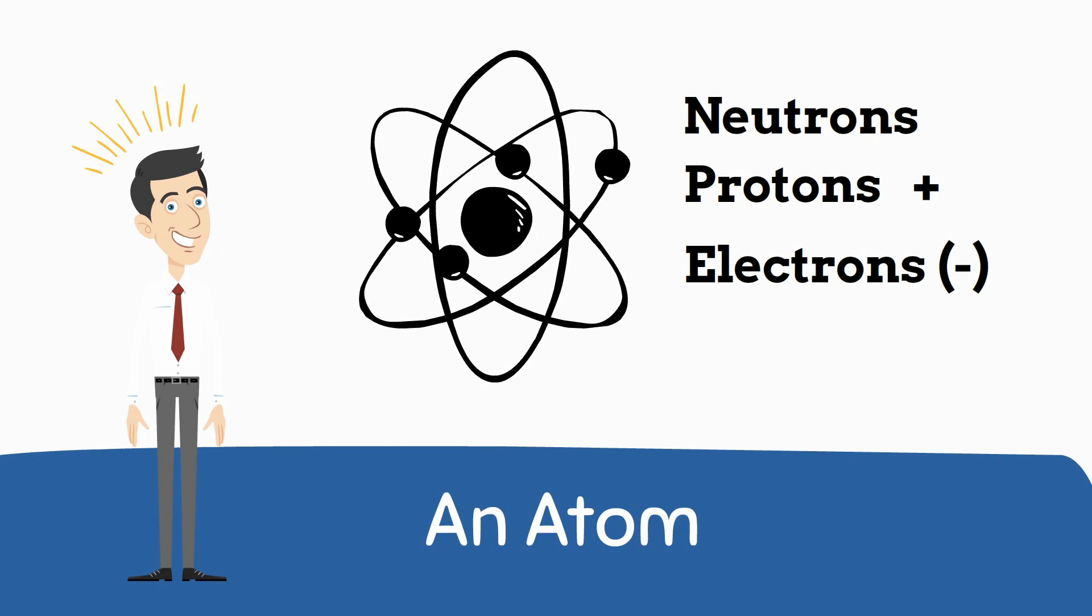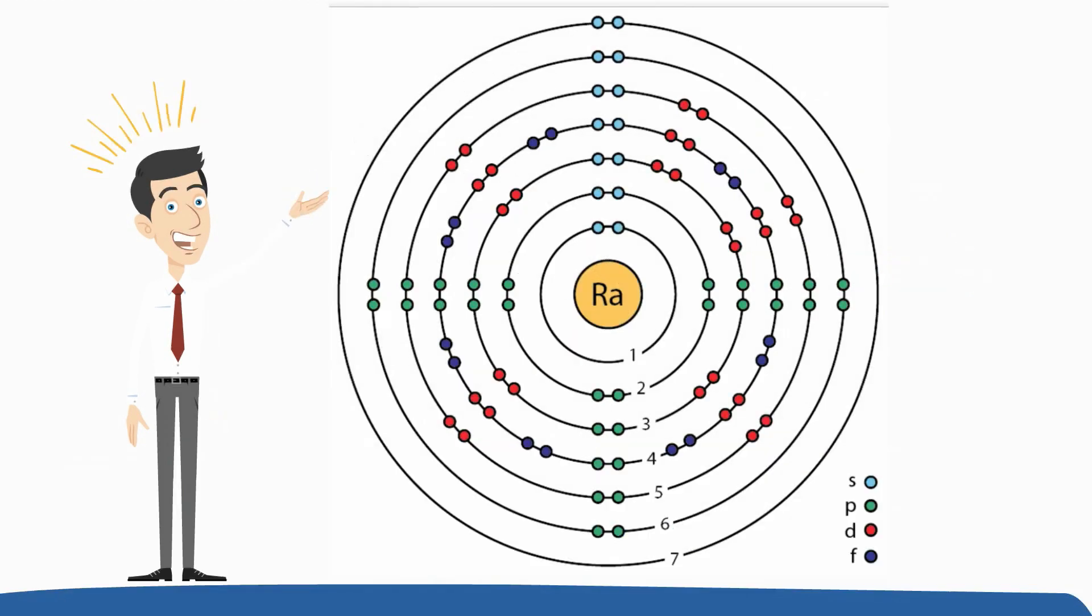These shells can be numbered numerically 1, 2, 3, 4, 5, 6, 7, or with the letters K, L, M, N, O, P, and Q.